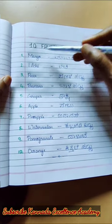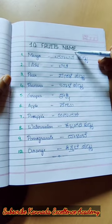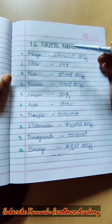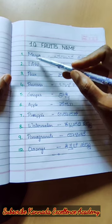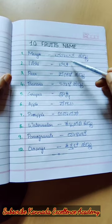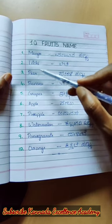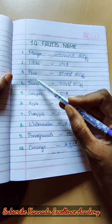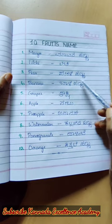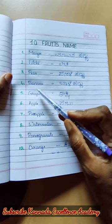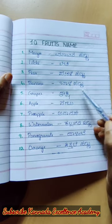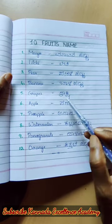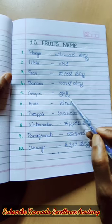Ten fruit names in English and Kannada. Mango. Litchi. Grapes — Drakshi.